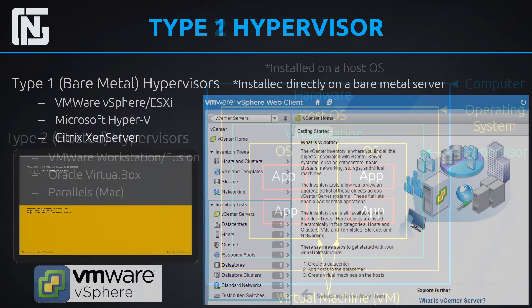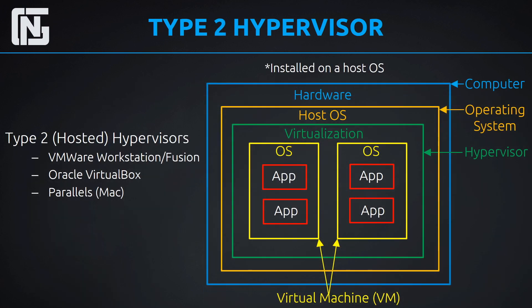Type 2 hypervisors are quite different — and something you may have already seen before. For example, you may have a copy of VMware Workstation if you're on a Windows machine, or VMware Fusion if you're on a Mac. You install that on your computer and then you can run virtual machines from your own computer. Type 2 hypervisors are installed on the host operating system — directly on a Windows host, Linux host, Mac, or something like that. So we have our computer — the bare metal hardware — and then we have our operating system already installed, such as Windows.